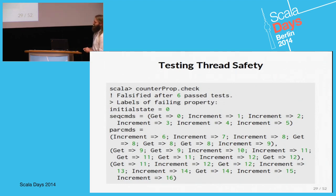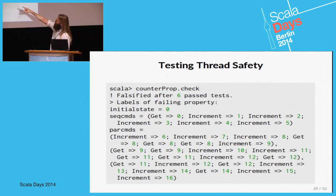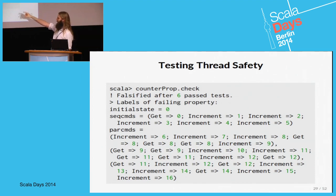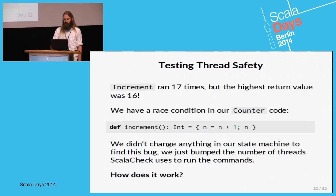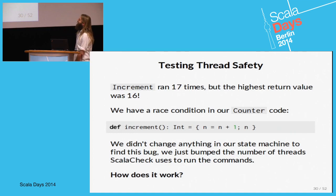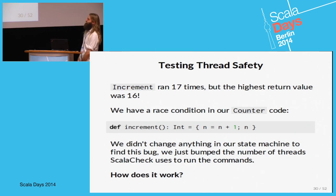This is very messy. But if we count the number of times increment has been called, we find it has been called 17 times. But the highest value ever returned is 16. So there's something wrong — and it's not difficult to see, because we have a race condition in our increment method.